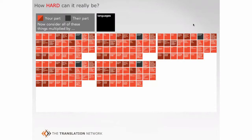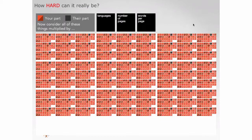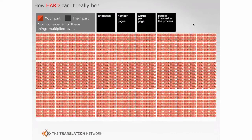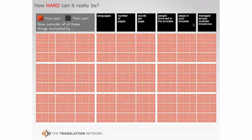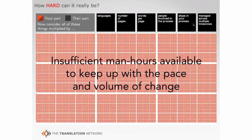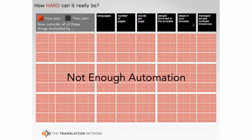How hard can it really be? When you multiply languages by the number of pages, words per page, people involved, steps in the process, and managing across multiple time zones, this becomes a big burden for most web project managers. Insufficient man-hours are available to keep up with the pace and volume of change. Too many manual steps exist — we see folks managing this in Excel spreadsheets, downloading content and sending it to a translator. We automate all of that via our translation management system.